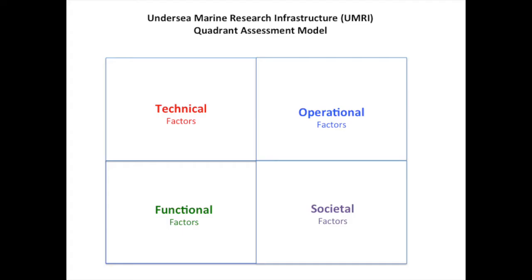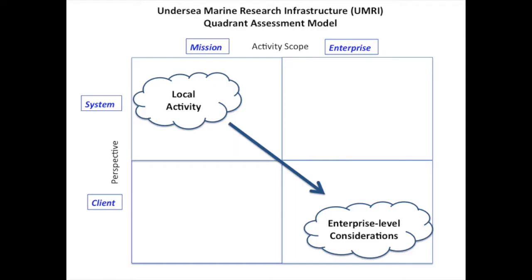The personal decisions that really do impact that funding. My solution was to devise a simple four-quadrant model, where you look at the technical, operational, and functional factors — really the science — and the societal factors. This is laid on axes so you can look at this from a local activity aspect to more of an enterprise-level consideration.